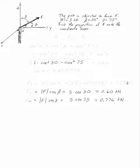The pole is subjected to a force F, where you've got a magnitude of 3 kilonewtons, beta to the positive y-axis is 30 degrees, gamma to the positive z-axis is 75.